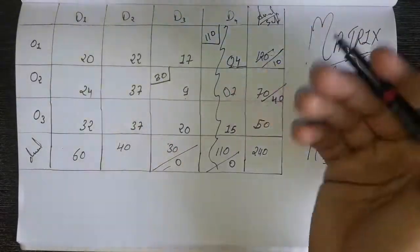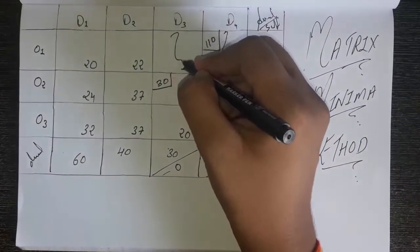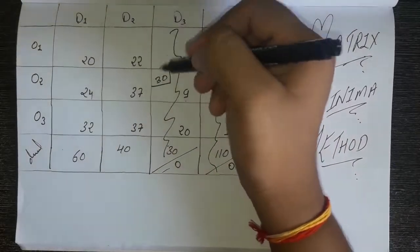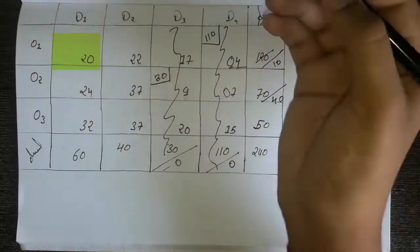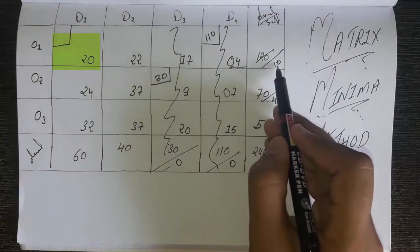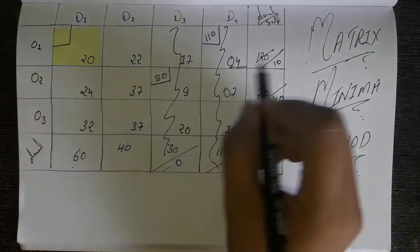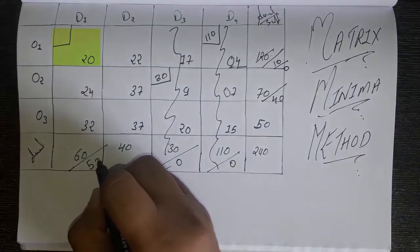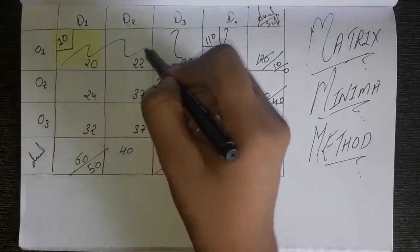Because this became 0, we cut out this column — making a line here. Now we have a 2 by 3 matrix remaining. Do the same thing: find the lowest number. You can see 20 is the lowest here. Make a square and check the supply. The availability is 10 and the demand is 60. Subtract: 60 minus 10. So the availability becomes 0 and the demand becomes 50. Write 10 here. Now this row became 0, so cut out this whole line.